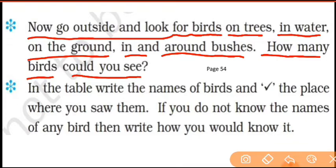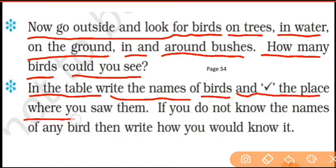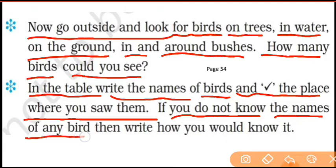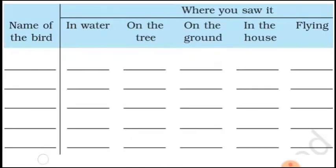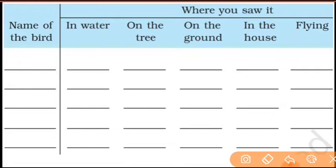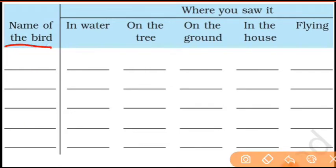Now let's look at the question we have here. Write the names of birds and tick the place where you saw them. You have to write the names of the birds and tell where you see them. If you do not know the name of any bird, write how you would describe it. Let's see the table — write the name of the bird and where you saw it.